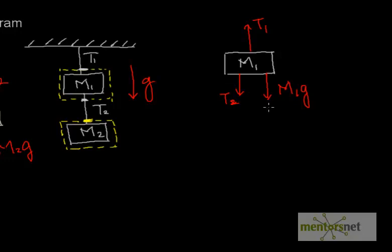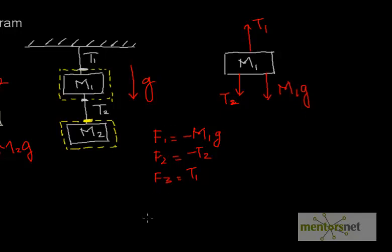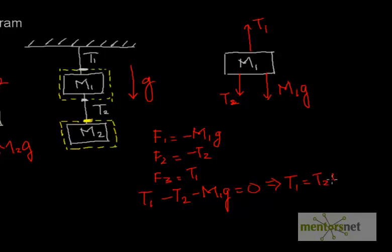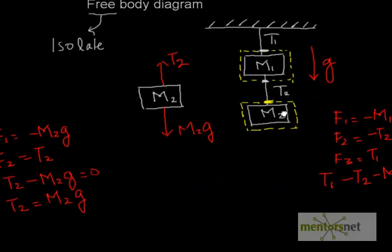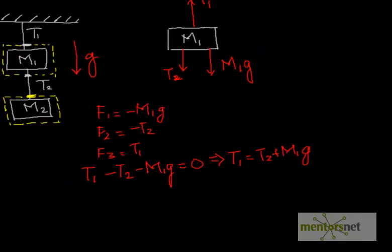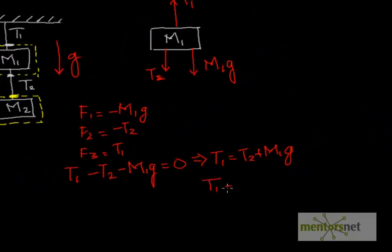Now a simple force balance for M1. Taking F1 = −M1·G, F2 = −T2, and F3 = T1, the sum of all three equals zero: T1 − T2 − M1·G = 0, giving T1 = T2 + M1·G. We previously solved T2 = M2·G, so substituting: T1 = M2·G + M1·G.